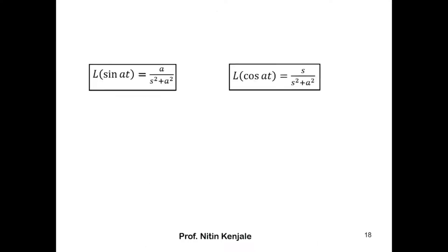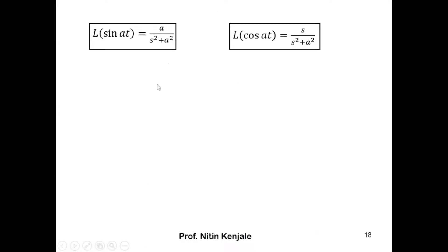So now we have formulas for Laplace of sine at and cos at, with the help of which you can find out Laplace of any such sine and cosine function. For example, Laplace of sin 3t would be: here a is 3, so replace this a on the right-hand side by 3. We get Laplace of sin 3t is equal to 3 upon s squared plus 3 squared.